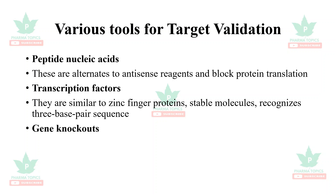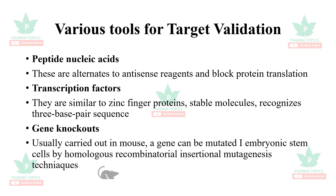Gene knockouts are usually carried out in mice, where a gene to be mutated in the cells is done by homologous recombinatorial insertional mutagenesis techniques.